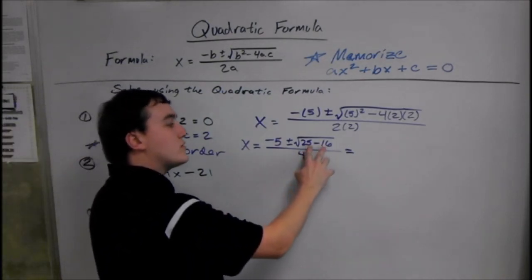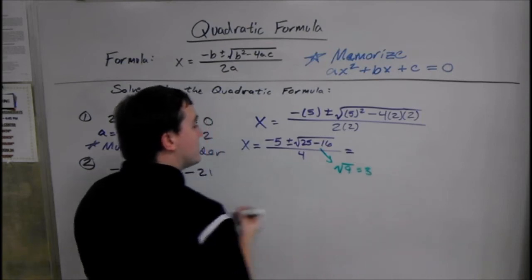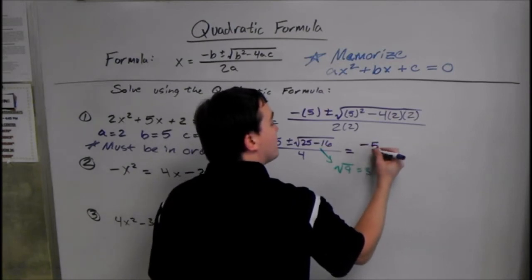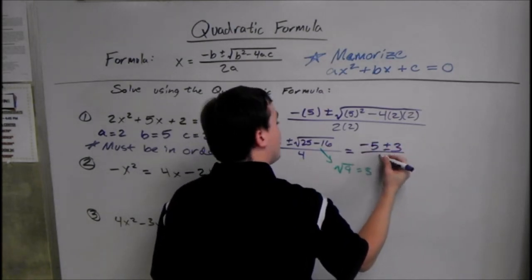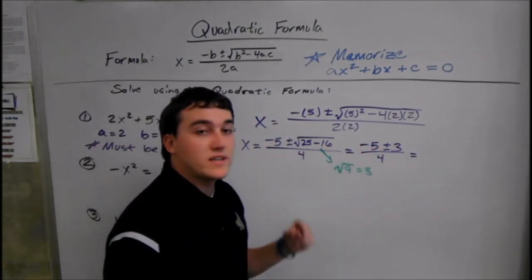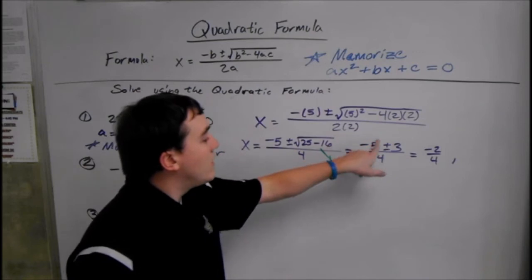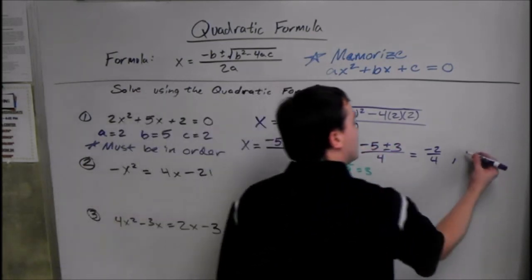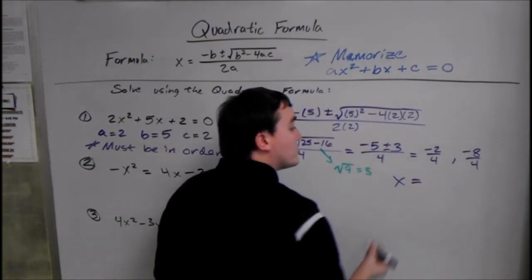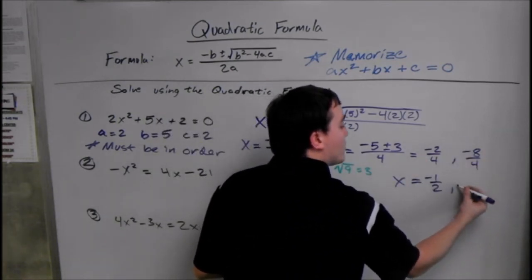We have the square root of 25 minus 16. We know that is the square root of 9, which is just 3. So this is going to give us two answers, and we separate them by a comma. We have negative 5 plus or minus 3 over 4, which equals two things — one's a plus, one's a minus. So we have negative 5 plus 3 is negative 2 over 4, and negative 5 minus 3 is negative 8 over 4. Then you simplify: x equals negative 2 over 4 reduces to negative 1 half, and negative 8 over 4 reduces to negative 2.